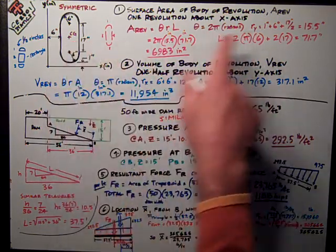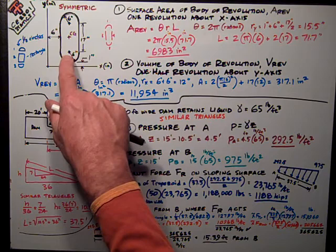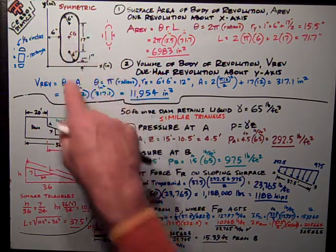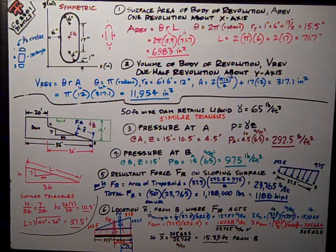I've computed the distance to the centroid as 1 inch plus 6 inch, the radius of the half circle, plus half of the height of the rectangle, 17, divided by 2. It gives me 15.5 inches.